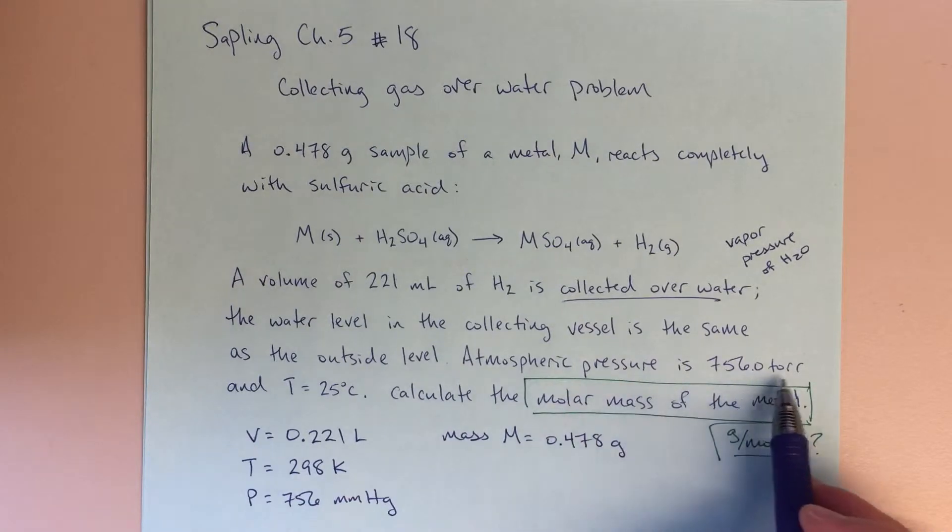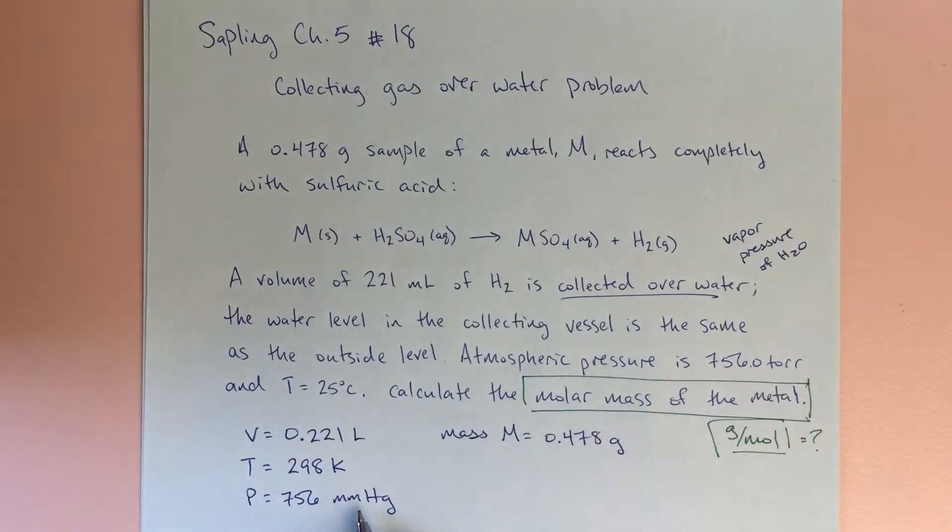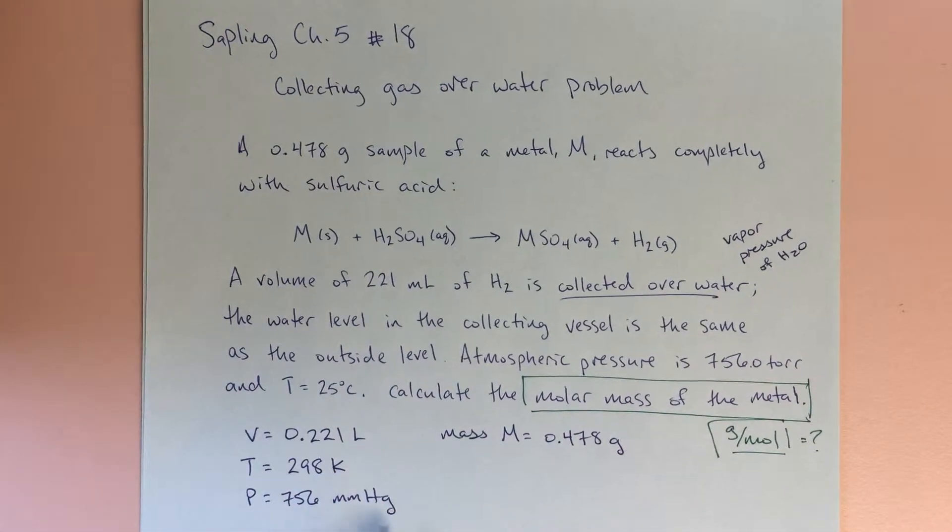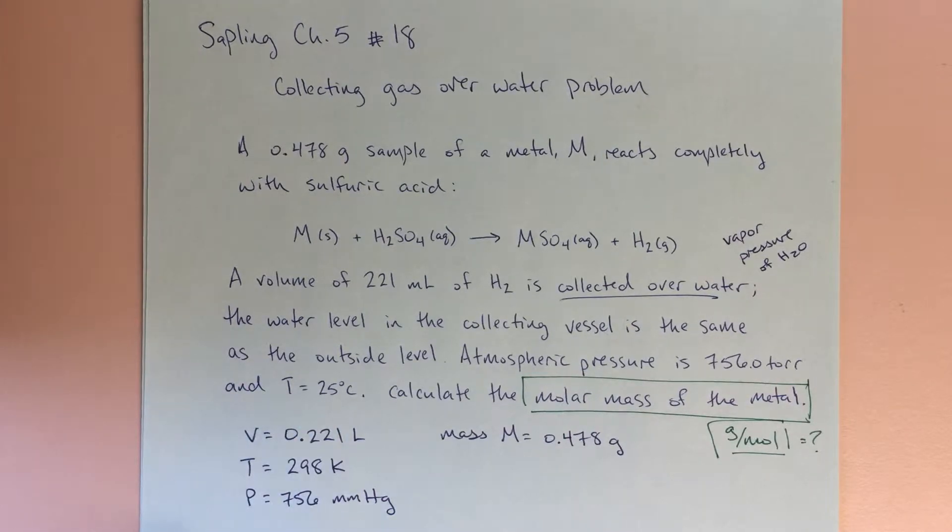Atmospheric pressure is 756 torr. Torr is just another way to say millimeters of mercury or it's another unit that's the same as millimeters of mercury. So down here when I organize my information, I just change that right away. And temperature is 25 degrees Celsius.